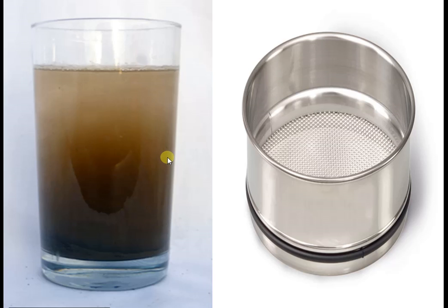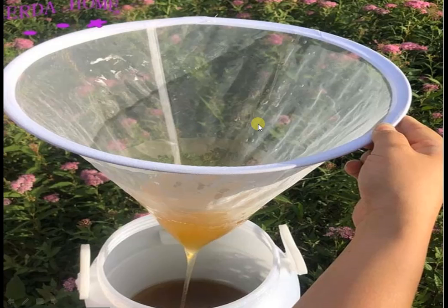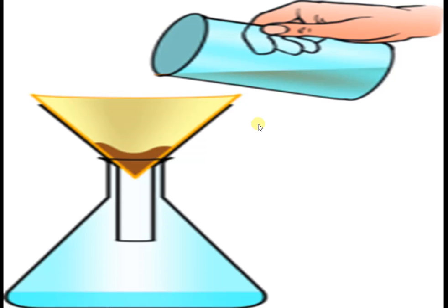Can you separate mud from muddy water using a sieve? No. How small should the pores of the sieve be to do this? Use a cloth as a sieve and try to do this. Is the water clear after sieving? Yes.